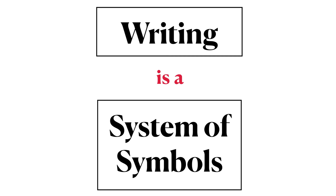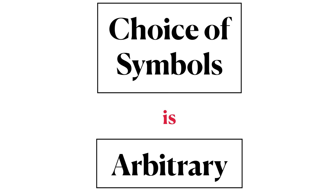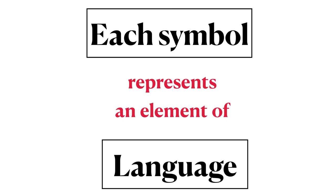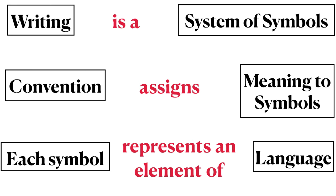Let's review what those linguists will know about writing as a system of symbols. They will know that every writing system is a system of symbols, and that the choice of those symbols is essentially arbitrary. They will know that conventions assign meaning to symbols, and that in human languages, each symbol represents an element of language. In other words, writing is a system of symbols, convention assigns meaning to those symbols, and each symbol represents an element of language.